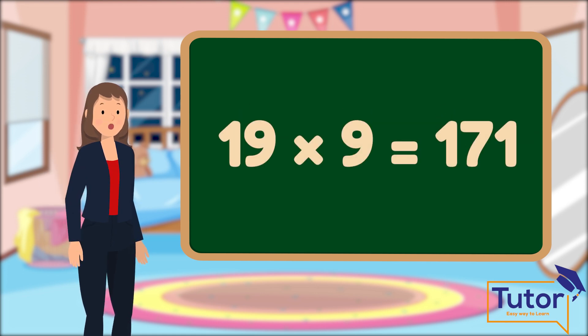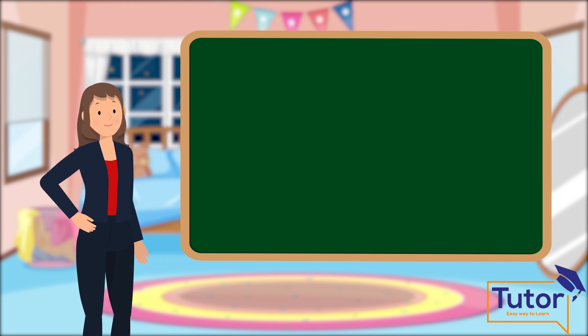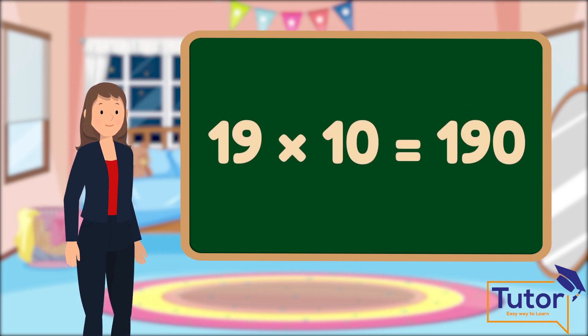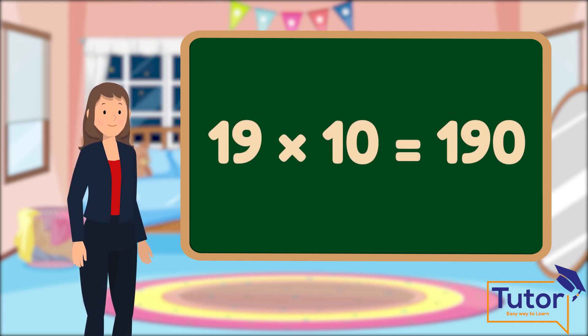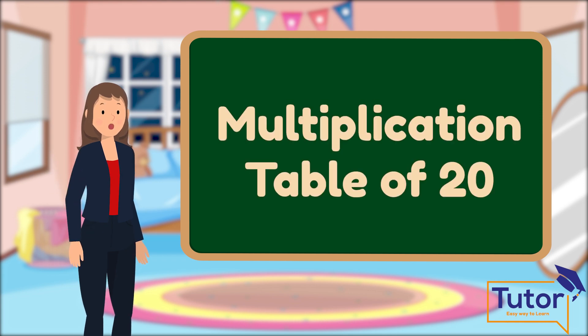19 into 9 equals 171. 19 into 10 equals 190. Multiplication table of 20.